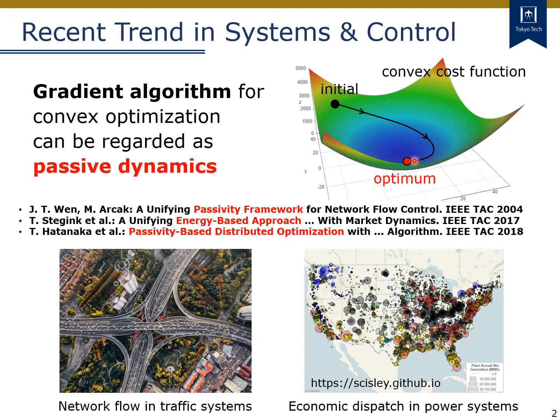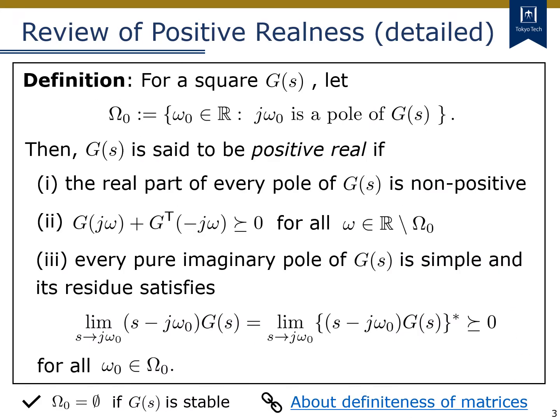As you can easily find, optimization is a key topic in the design and control of large-scale systems, such as urban traffic systems and power systems. As we will see in this lecture, the positive realness explained in the previous lectures can be understood as a frequency domain equivalent of passivity in the time domain. So, let's review here the positive realness of transfer functions.